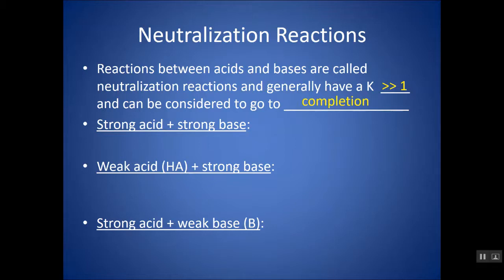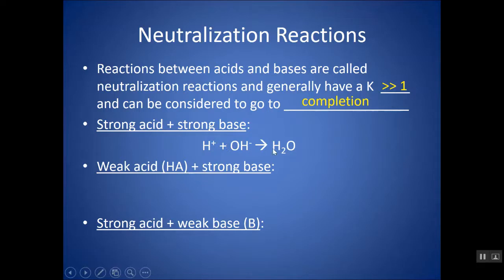For a strong acid and strong base, the net ionic equation would be H⁺ reacting with all the OH⁻ present to produce H₂O. This is assumed to go to completion — notice the arrow pointed only to the right.